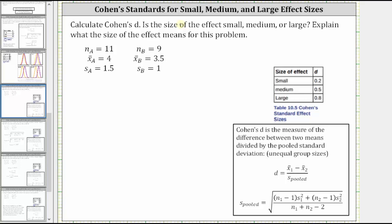Let's take a look at an example. We're asked to calculate Cohen's d, is the size of effect small, medium, or large, and explain what the size of the effect means for this problem.